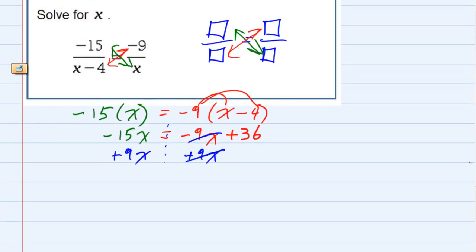on the left-hand side, those are like terms, so that's negative 6x, subtracting and keeping the sign of the larger, equals 36 on the right because the 9x is gone.